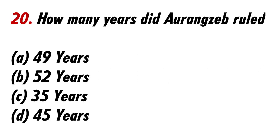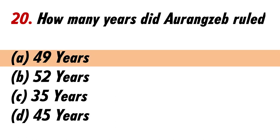How many years did Aurangzeb rule? Answer A: 49 years.